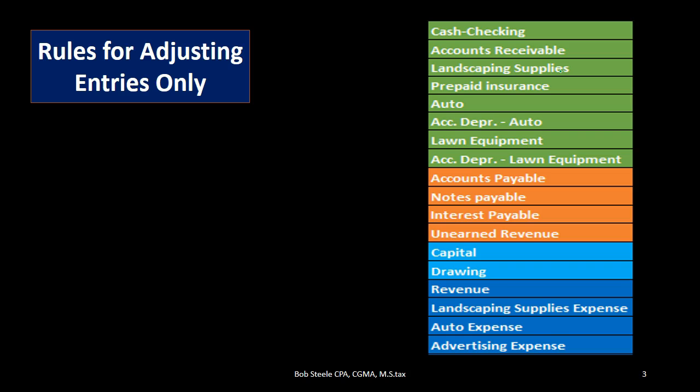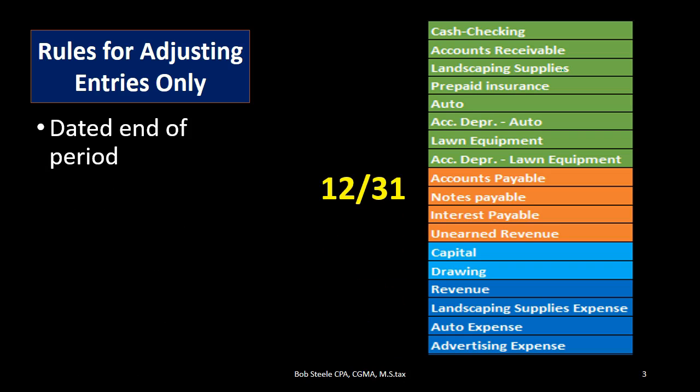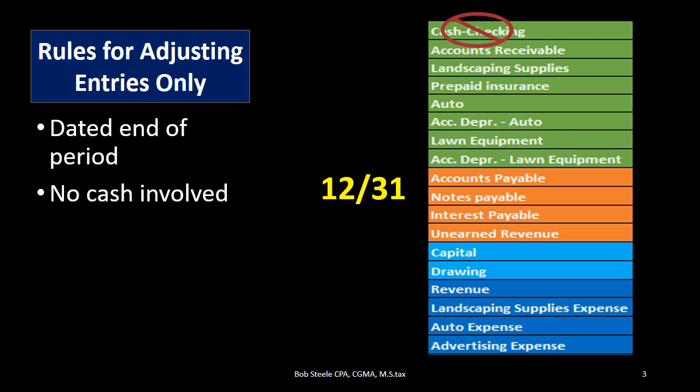Then we have rules that are going to be specific to adjusting journal entries. These are going to be really important because we're going to construct our thought process based on these rules — a slightly different thought process than when constructing normal journal entries. Rules for adjusting journal entries only include: dated end of the period. So if it's the end of the year we're going to say 12/31, or the end of the month — the date of the financial statements, the balance sheet date.